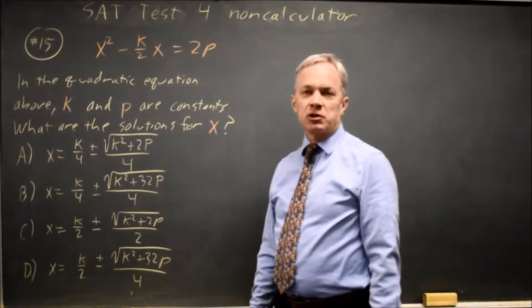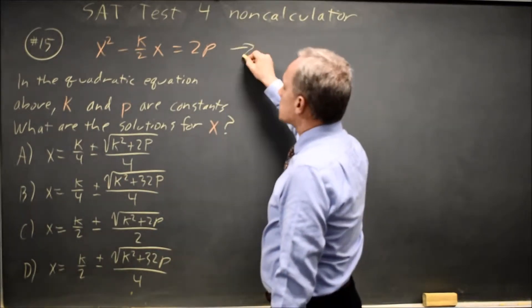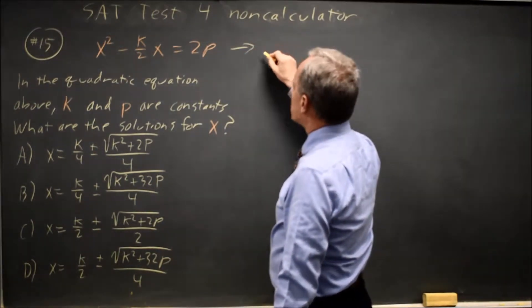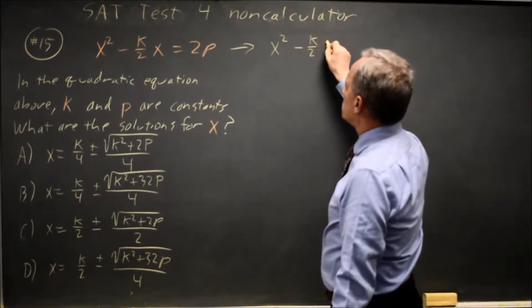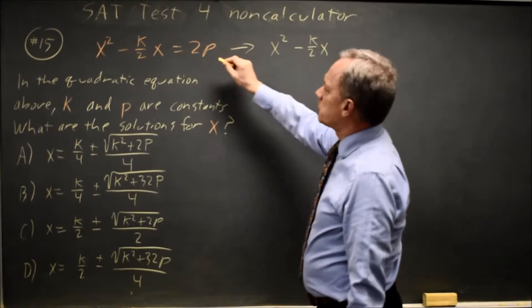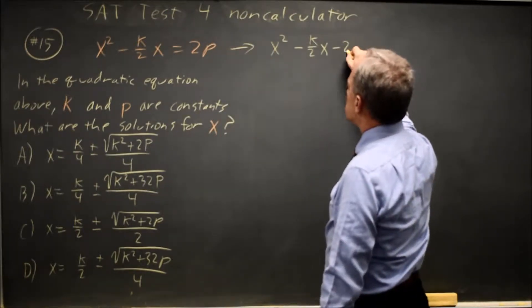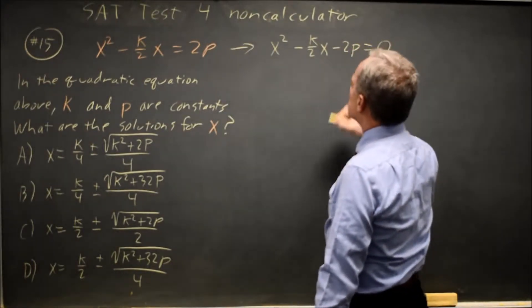Given the format here, we can see we're going to use the quadratic formula, so let's set it up appropriately for the quadratic formula. x squared minus k over 2x. If I subtract 2p from both sides, I get minus 2p equals 0.